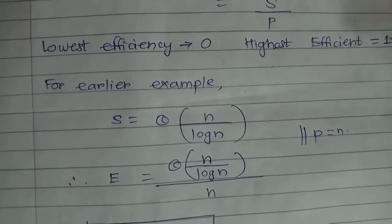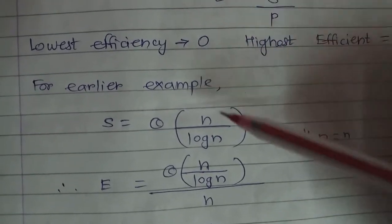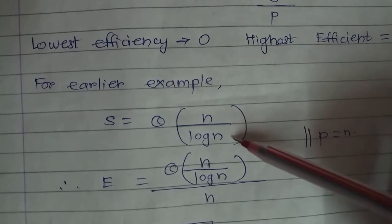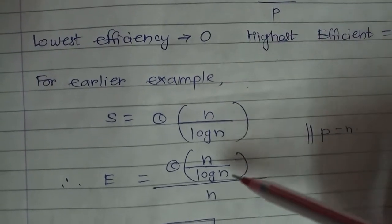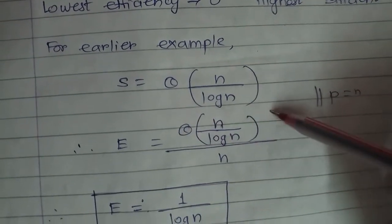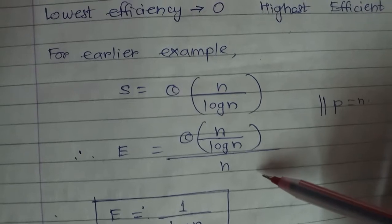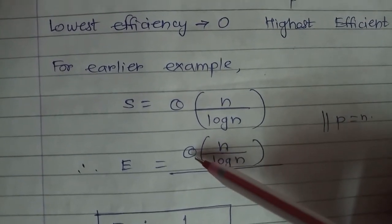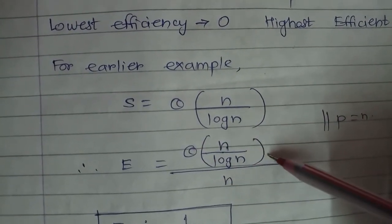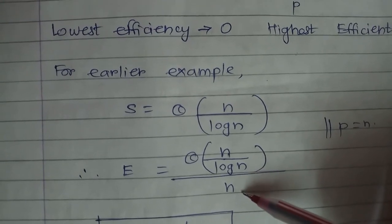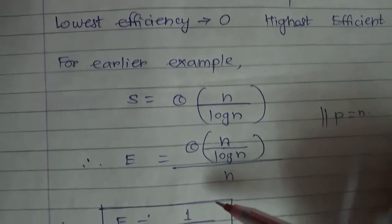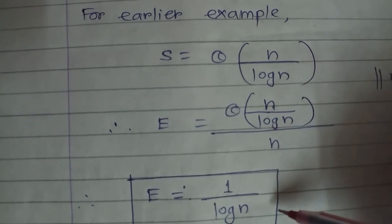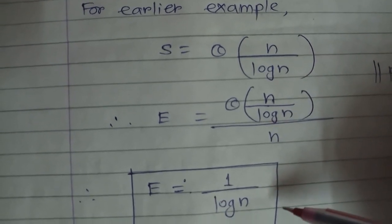From the earlier example, speedup was theta of n over log n. So efficiency equals speedup divided by number of processing elements, which is theta of n over log n divided by n processing elements. This gives efficiency equal to 1 over log n.